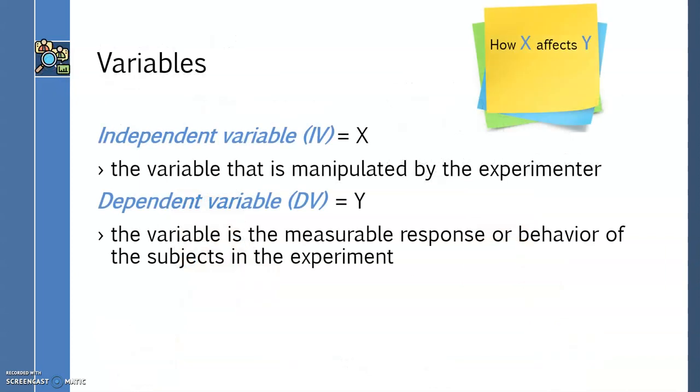Let's go back to the two variables we've been talking about, caffeine or no caffeine, and exam scores. These variables have specific names. One of the variables is the independent variable, X, and the other is the dependent variable, Y. The independent variable is the variable that is manipulated by the experimenter. The dependent variable is the variable that is the measurable response or behavior of the subjects in the experiment.